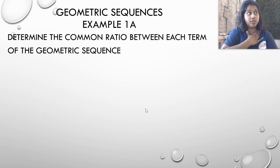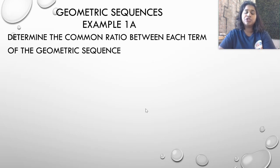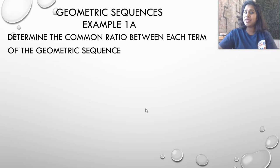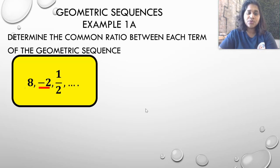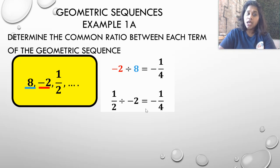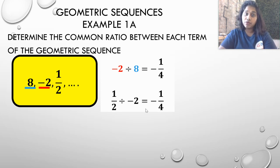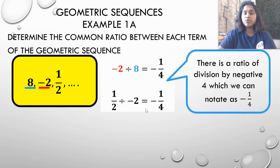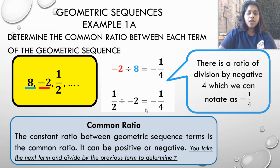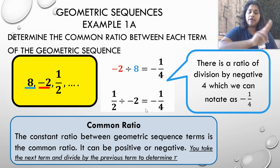Let's jump into Example 1a: determine the common ratio between each term. With arithmetic sequences we found the common difference by subtracting the first term from the second. Here, we divide instead. We take negative two and divide by positive eight, getting negative one-fourth. Dividing the third term one-half by negative two also gives negative one-fourth. So our common ratio is negative one-fourth — the constant ratio between geometric sequence terms, found by dividing the next term by the previous term.